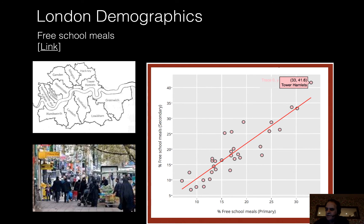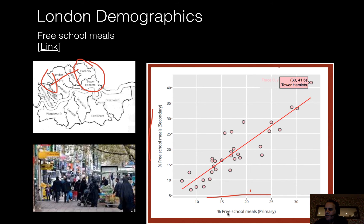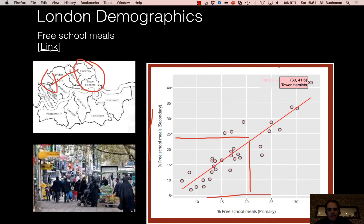Looking at the different boroughs inside London, these are the most deprived areas moving to the really affluent areas. This shows free primary school meals and free secondary school meals, and we actually see an almost direct correlation between those receiving free primary school meals and then secondary school meals. It almost shows that once an area has defined its free school meals profile in primary, it will be almost the same in secondary.